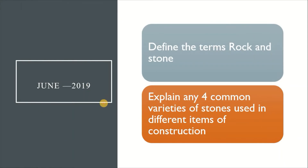The June 2019 paper short answer is: define the terms rock and stone. The rock and stone definitions were explained in the first video. The essay question is: explain the four common varieties of stones used in different items of construction. We will explain the four common varieties of stones for 10 marks.